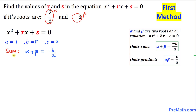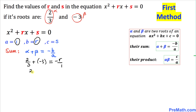Here we are going to find the sum alpha plus beta, that means we're going to add these two roots: 2/3 plus negative 3 equals negative b over a. In our case b equals r and a is 1, so that's going to become negative r divided by 1. On the left hand side that gives us 2/3 minus 3 equals negative r.